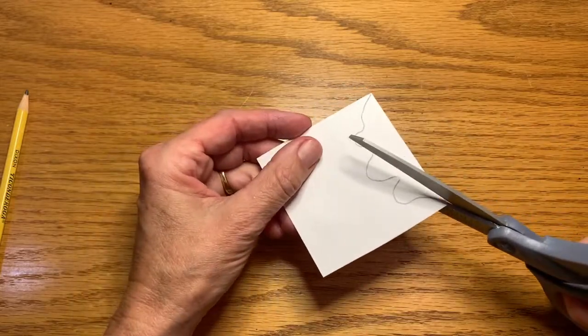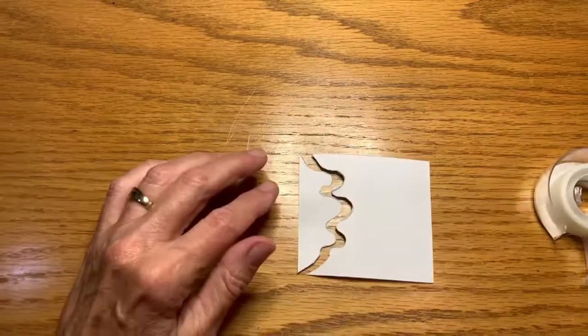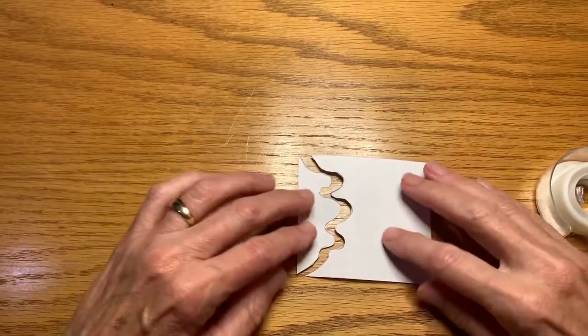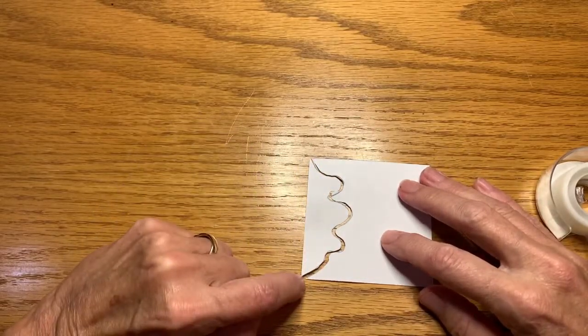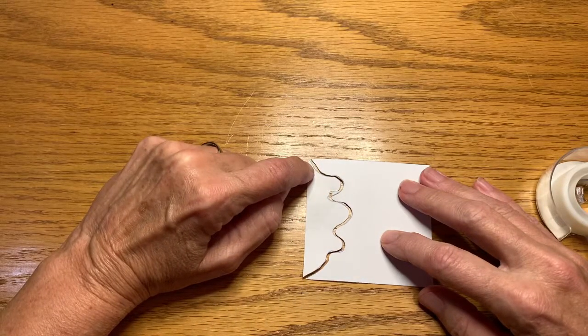I am now going to take my scissors and cut that out. Alright, so now I've cut out the design I made. I started exactly in one corner and ended in the other corner.